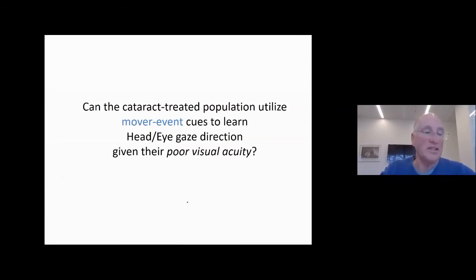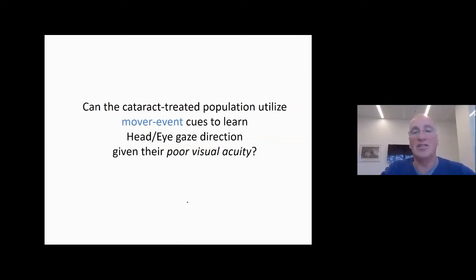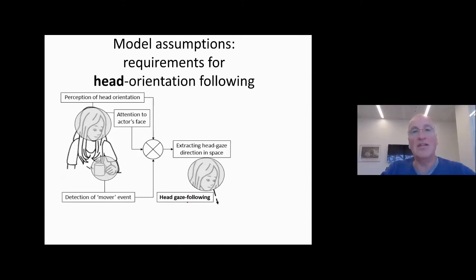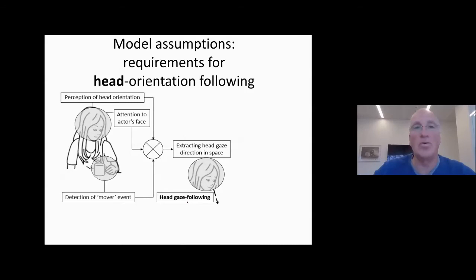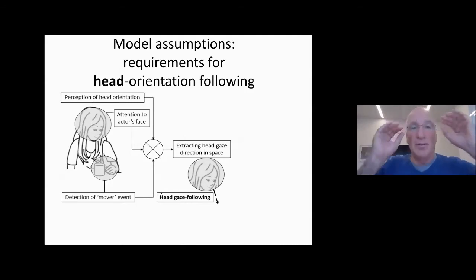Danny and Shimon have clearly shown that using this with a simple network and the mover event criteria, these networks can learn in an unsupervised way to extract the direction of gaze of others. The question is: can these cataract-treated kids use this? Can the late-treated population utilize these mover event cues to learn head or eye gaze direction, given their poor visual acuity? So let's think about what the model requires.